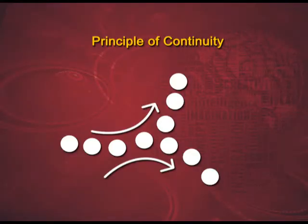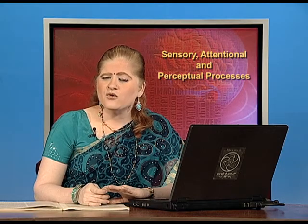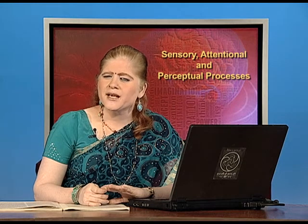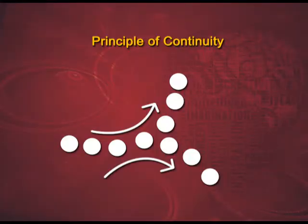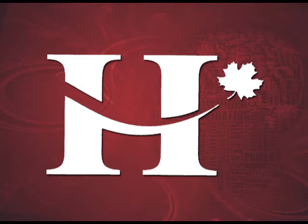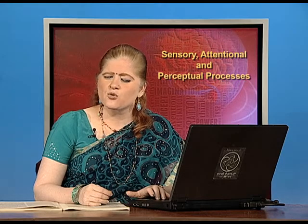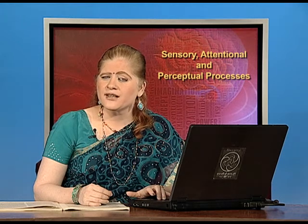Now we come to the principle of continuity offered by the Gestalt psychologists. It says that the human eye and brain have a natural tendency to look at objects when they appear to be continuous, giving a certain geometrical line or curve. This figure on your screens shows dark and light dots. You will say that there is a circular line of dots, with semicircles going upwards and downwards, irrespective of the fact that these dots differ in colour shade. In another figure, you will look at an alphabet H which leads to a maple leaf. Continuity tells us that things lead to one another; hence we perceive things together when they are continuous.